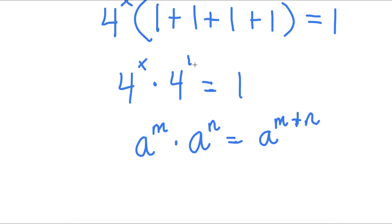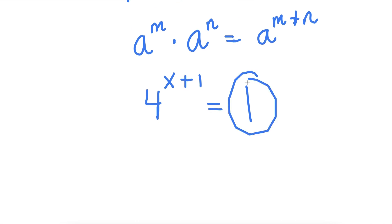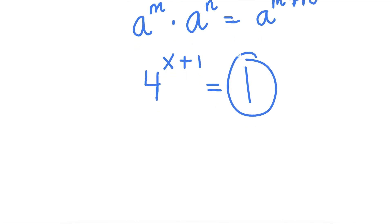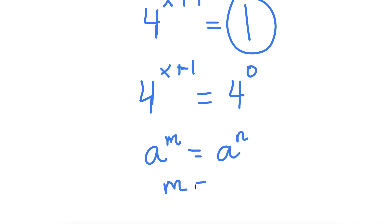So in this case, 4 to the power of x times 4 to the power of 1 is going to equal 4 to the power of x plus 1, and this is equal to 1. Now, 1 is the same thing as 4 to the power of 0. So I have 4 to the power of x plus 1 is equal to 4 to the power of 0. If a to the power of m is equal to a to the power of n, this means that m is equal to n.